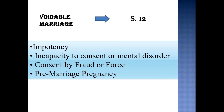According to Section 12, clause 1: any marriage solemnized whether before or after the commencement of this Act shall be voidable and may be annulled by a decree of nullity on any of the following grounds. Section 16 of the Hindu Marriage Act provides that children of void and voidable marriages are to be considered as legitimate children, and a wife of a void marriage cannot claim maintenance. However, if it is a voidable marriage, the wife can claim maintenance.